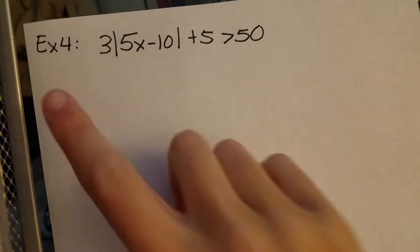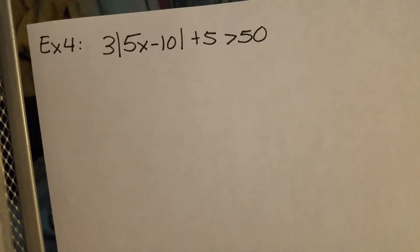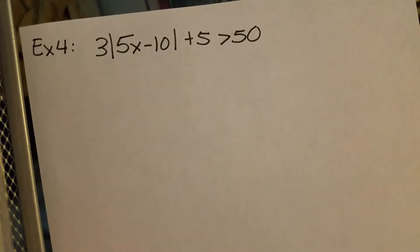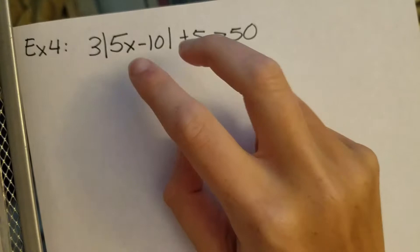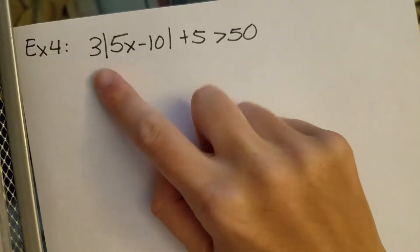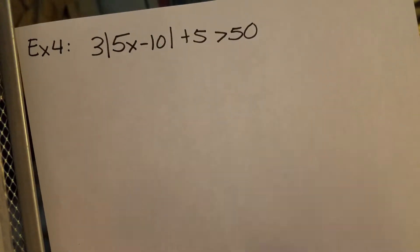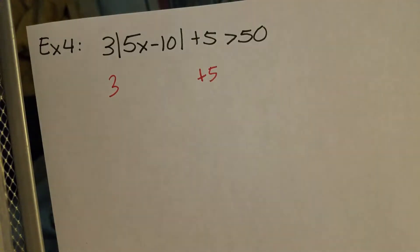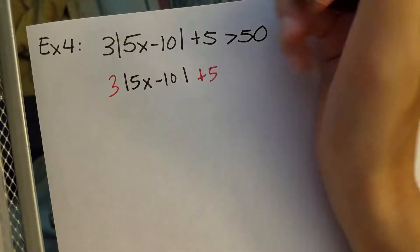We are now moving on to Example 4, which is very similar to Example 3. If you think you understand Example 3 pretty well, I encourage you to try this on your own and fast forward to the end to see if you got it right. But if you need a little more assistance, keep watching. Like before, the goal is to isolate the absolute value first, so everything in front or behind it must be moved to the other side. I'll be writing the items that need to move in a different color so you can see what must move before we split this into two separate inequalities.